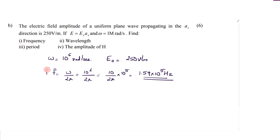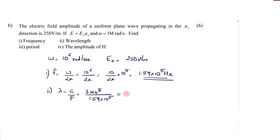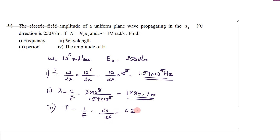Next, calculate wavelength. Lambda equals c divided by f, so 3 times 10^8 divided by 1.59 times 10^5, giving a value of 1885.7 meters. Third, the time period T equals 1 over f, which equals 2 pi divided by 10^6. Since 2 pi is 6.28, T equals 6.28 times 10^-6 seconds, that is microseconds. So we have the time period as well.